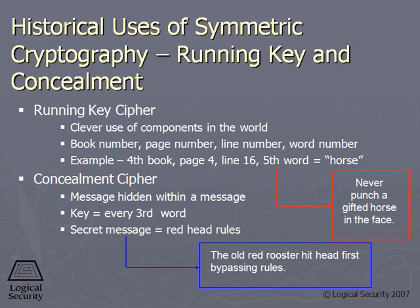A concealment cipher means there's a message within a message. I could write you a message that's long and fluffy — it says how are you doing, how's grandma, everything's okay here — all this stuff that doesn't seem important at all. But you and I have the same key. This is symmetric encryption.